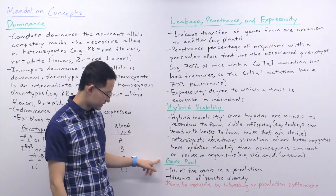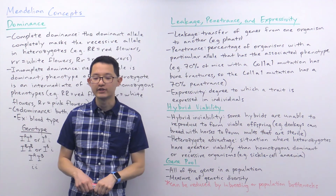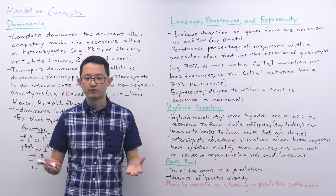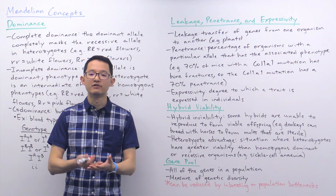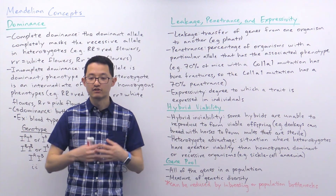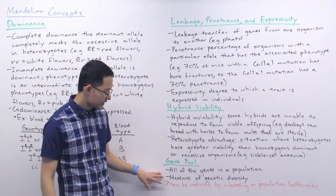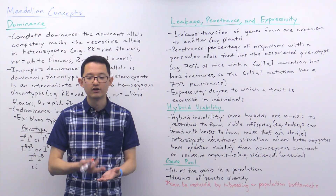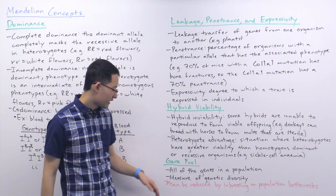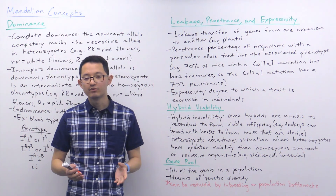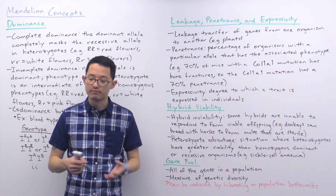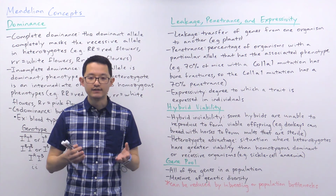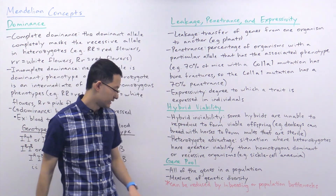The last topic is gene pool, which refers to all the genes in a population and is a measure of biodiversity. When you pool all genes from all individuals in a population, you assess how much variation exists. High variation means high genetic diversity; repetition of the same alleles means low genetic diversity. Gene pools can be altered by inbreeding and population bottlenecks, both of which reduce genetic diversity.